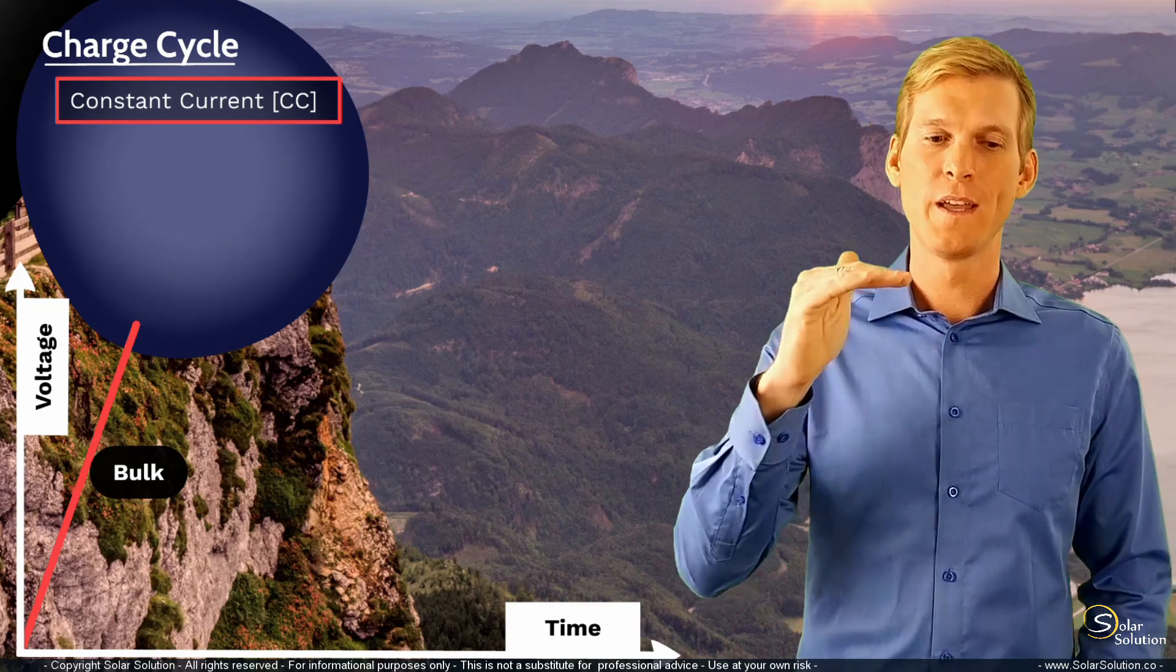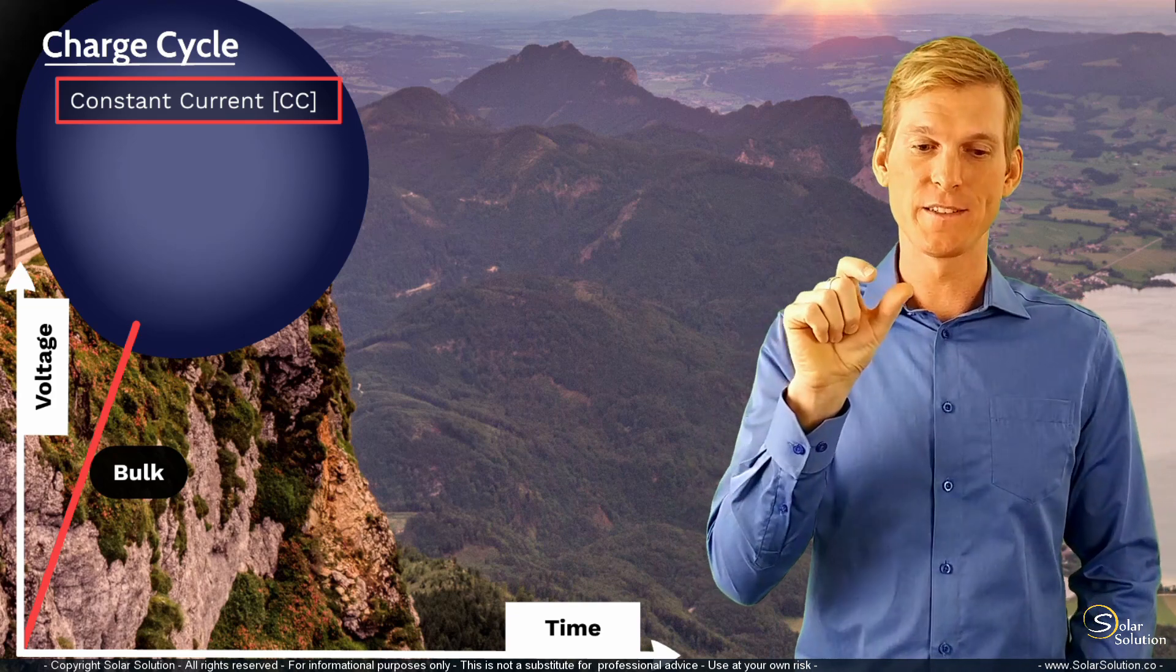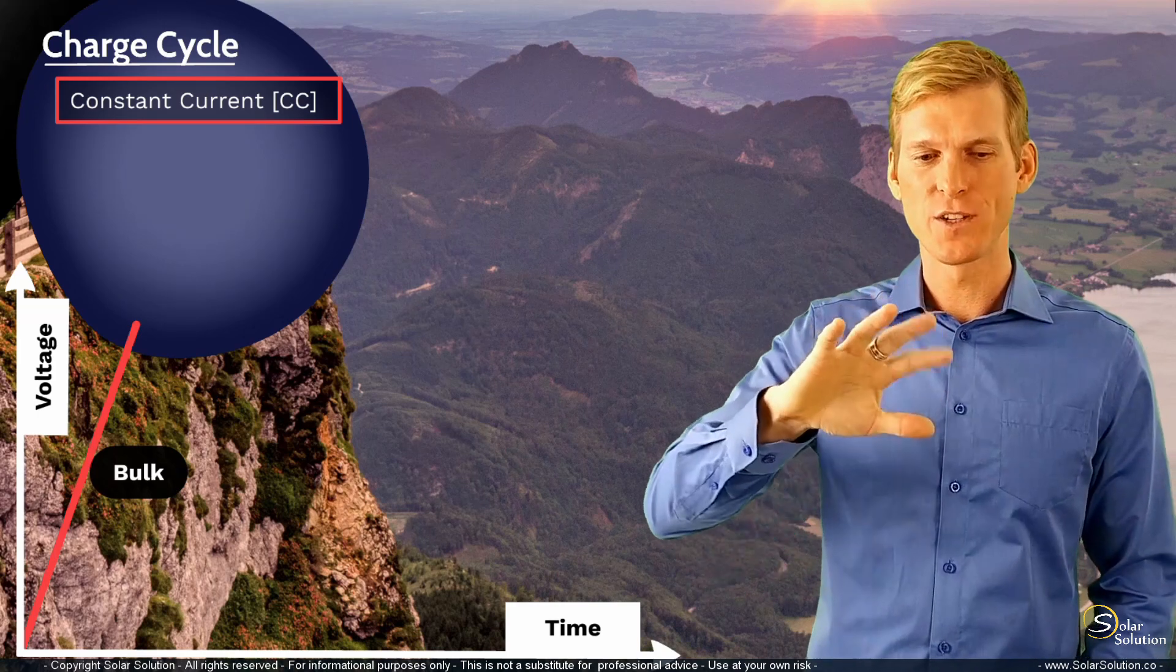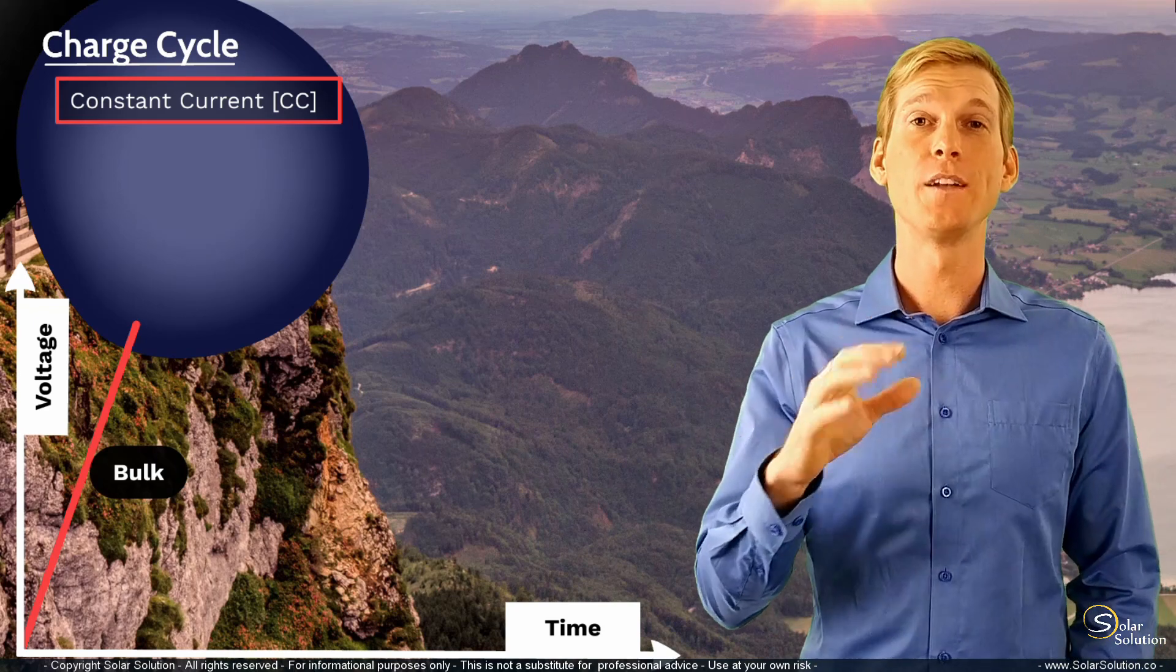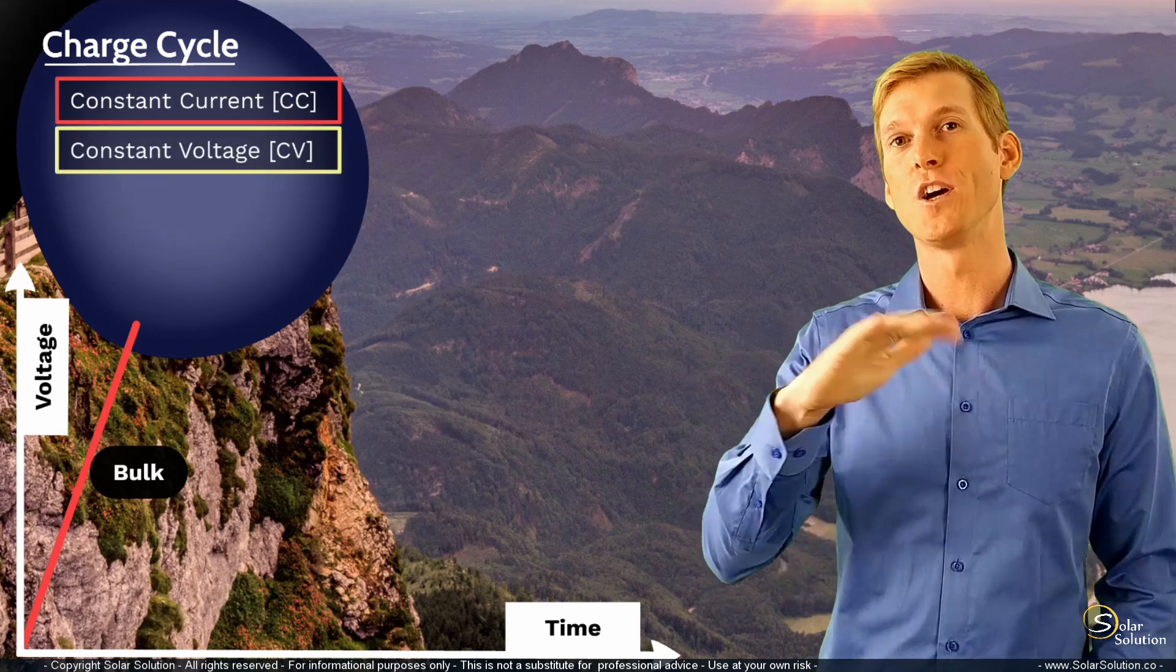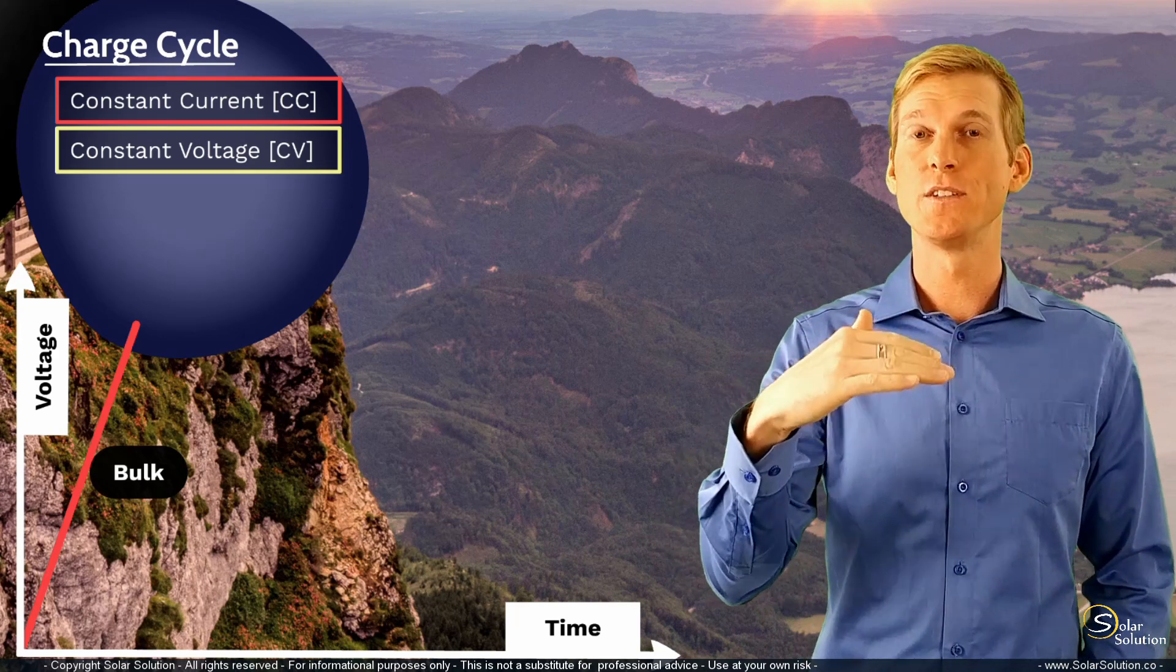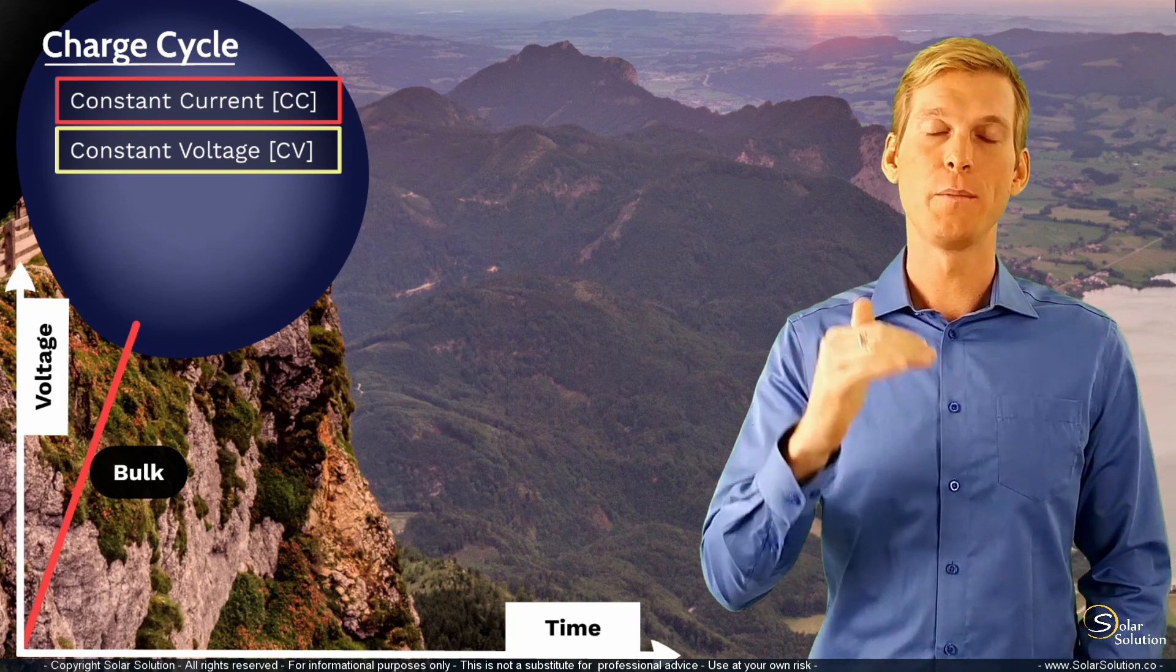Now after a while, as the voltage reaches a certain set point, which you or the manufacturer has configured into your charge controller, you are now starting to take a different approach on charging the battery. So we are now entering the yellow section, which is referred to as the constant voltage phase of the charging cycle. In this part of the charging cycle, you are adjusting the current in such a way that you maintain a constant voltage on the battery terminals.